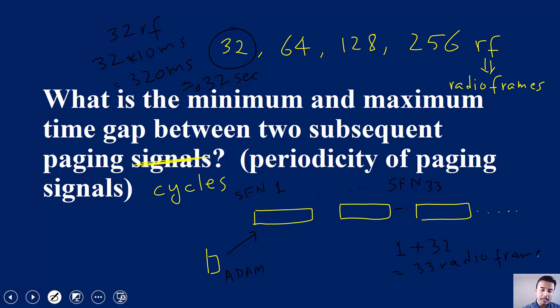So to answer the question: what is the periodicity? The periodicity you can always calculate by looking at what is the default paging cycle. If the default paging cycle specified is 128 radio frames, that means any UE will wake up after every 1.28 seconds or 1280 milliseconds, and that is the periodicity.